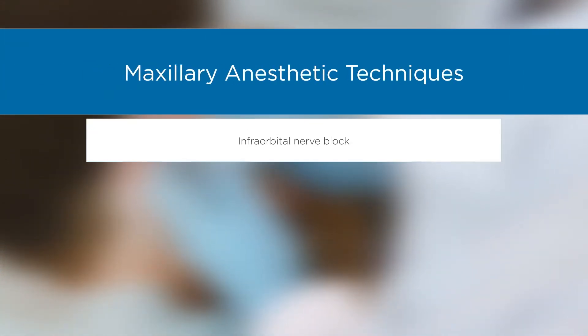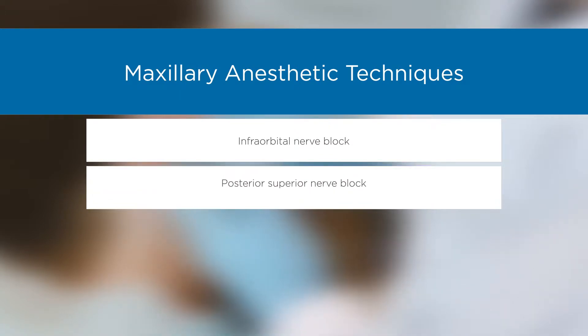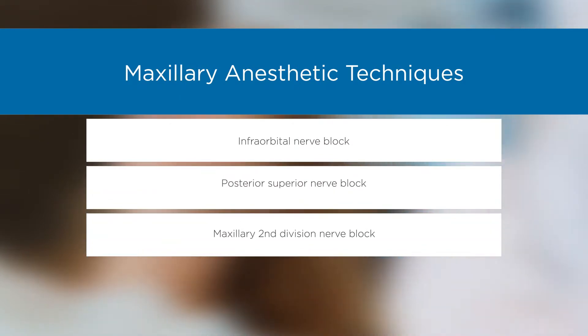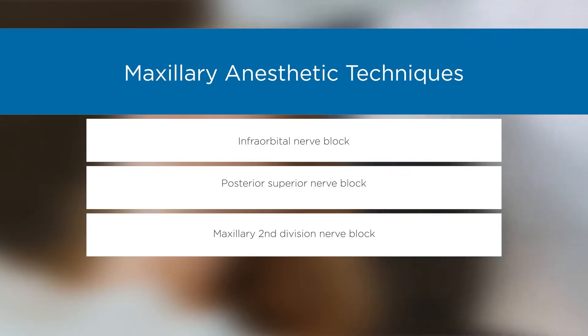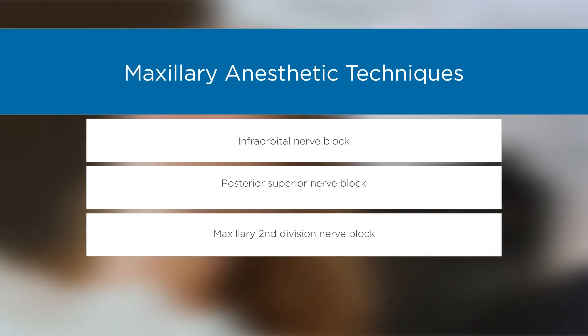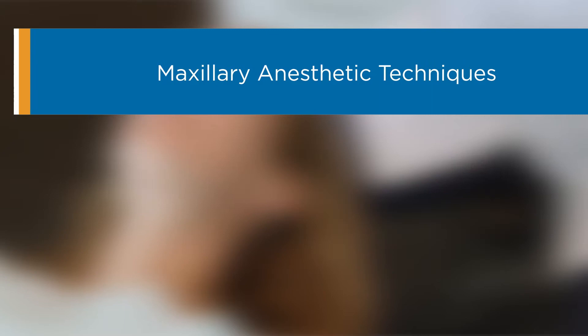Three other approaches for anesthesia in the maxilla may be alternatives to the supraperiosteal technique: the infraorbital nerve block, the posterior superior nerve block, and the maxillary second division nerve block. These techniques are easily learned and can be especially helpful with procedures involving multiple teeth.